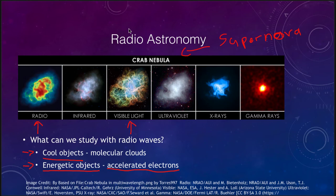Just 100 years ago, all we had was visible light — that was the only way we could observe anything. Now we can observe objects across the spectrum, and it gives us a much more complete view of the universe.